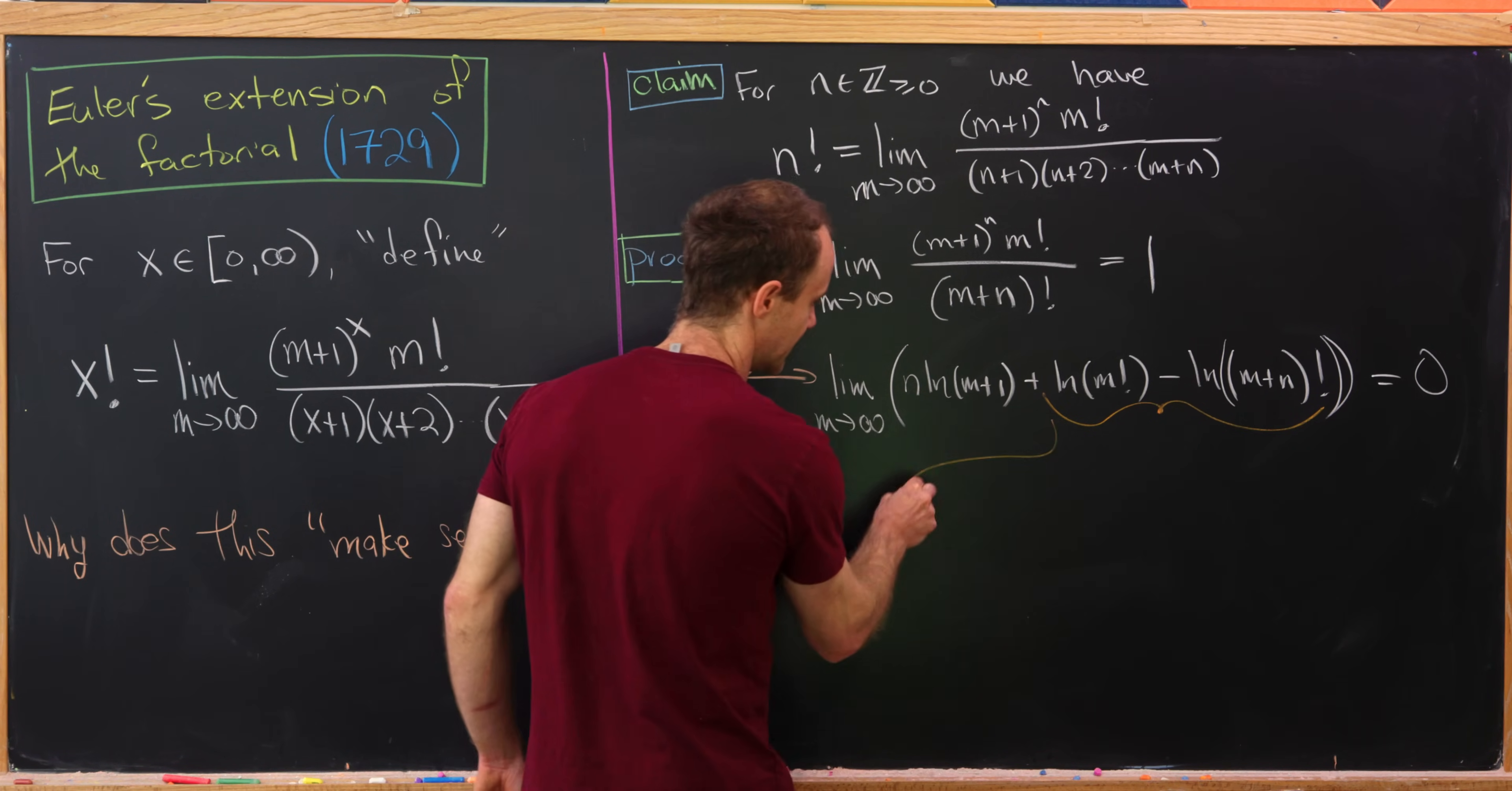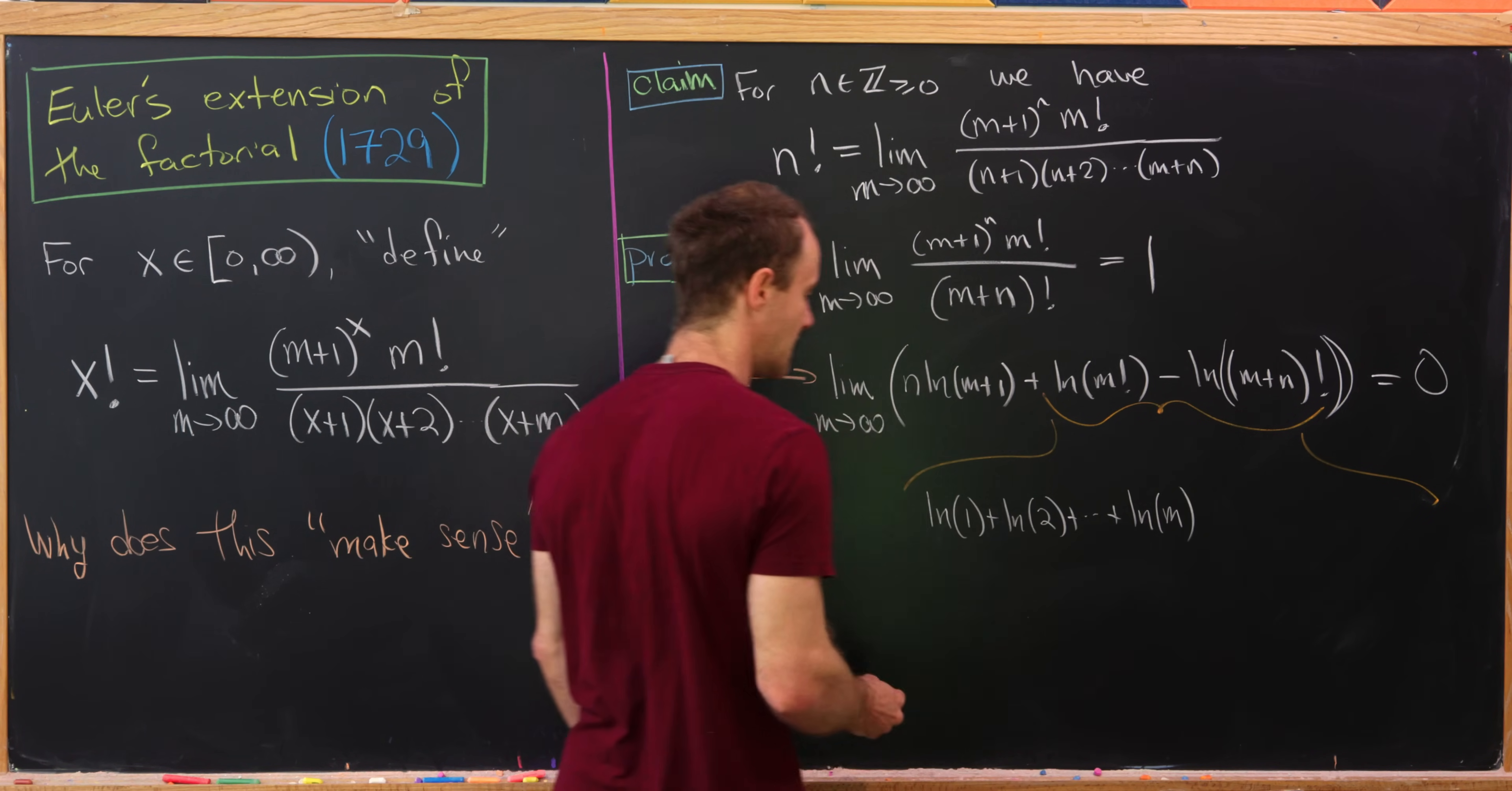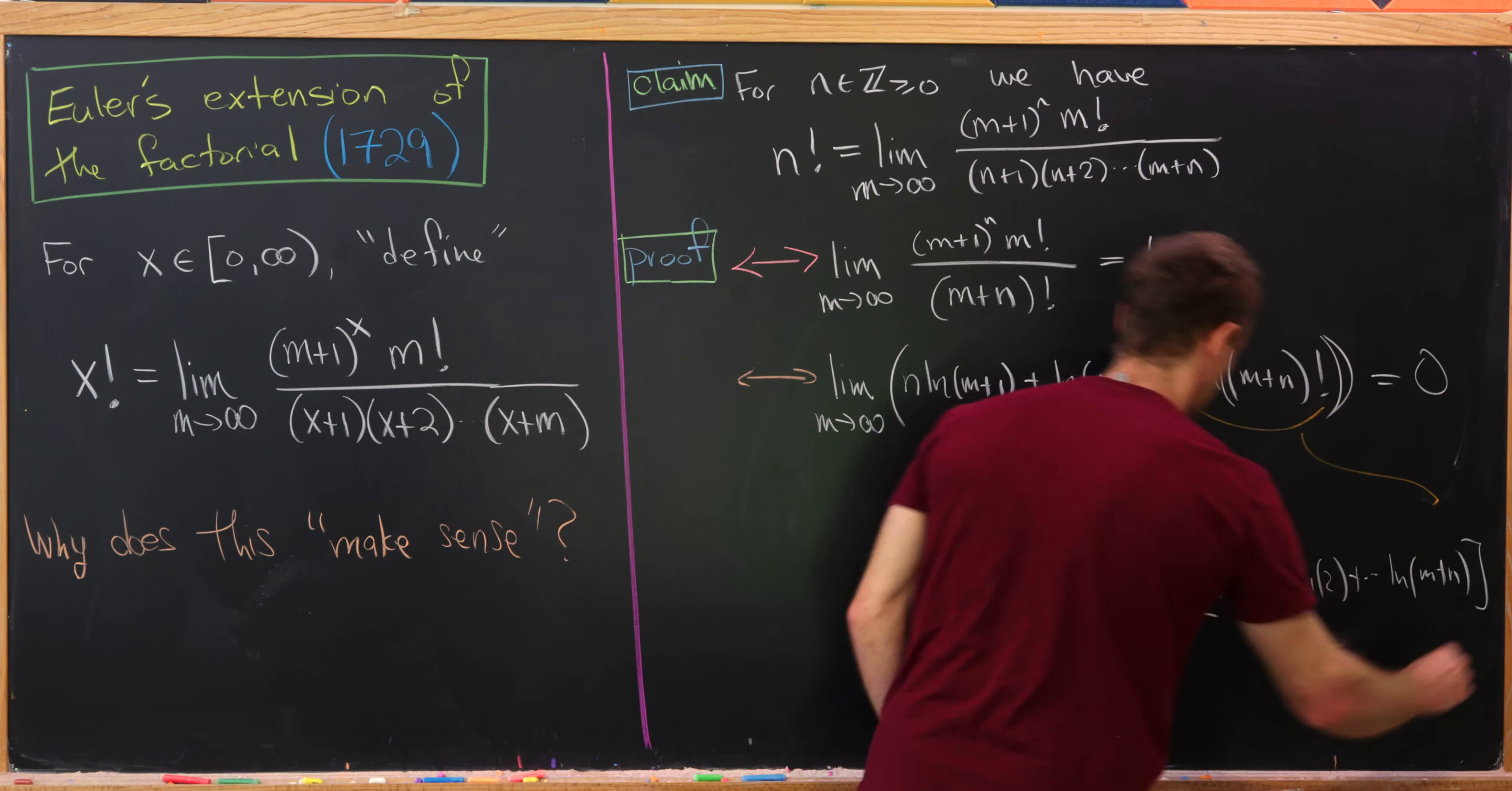So this term right here expands out into the following: we'll have ln(1) + ln(2) ending at ln(m). Okay, and then we'll subtract from that ln(1) + ln(2) ending at ln(m+n).